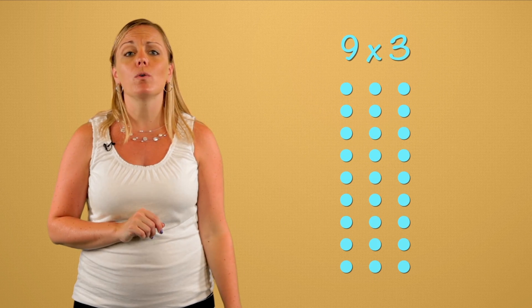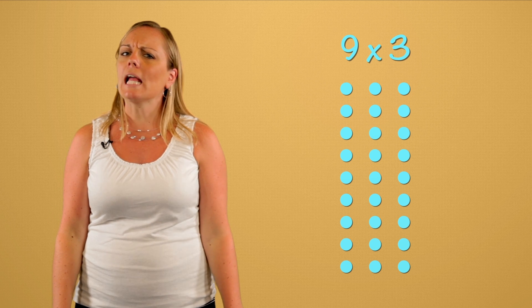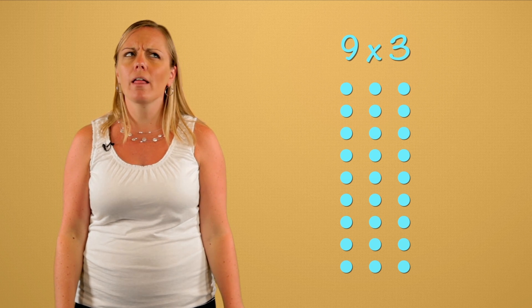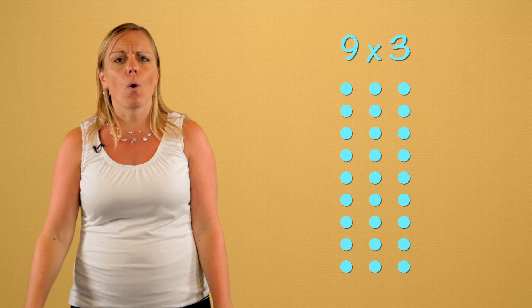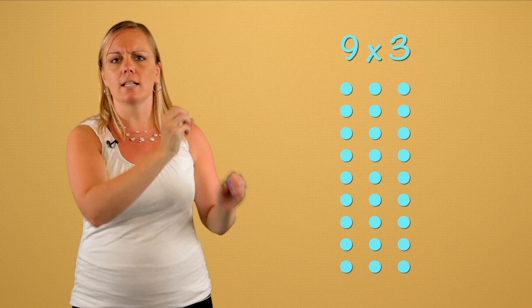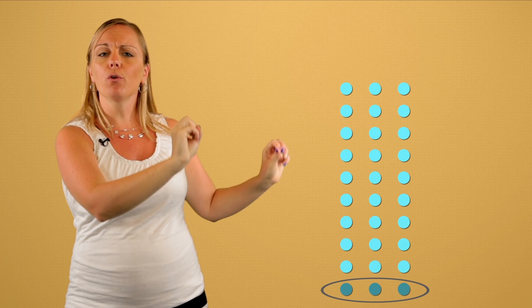Now for my next trick. We'll look at this ordinary array of nine rows of three. Nine times three. Well, that can be tricky. But with one wave of my hands, poof, a new row appears. Now we have ten rows of three.